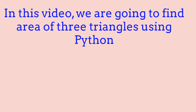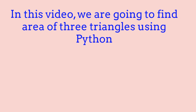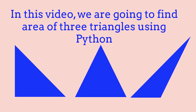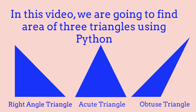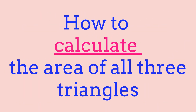In this video, we're going to be finding the area of three triangles using Python. The three triangles we're going to go over are right angle triangles, acute triangles, and obtuse triangles. In the last video, we learned how to draw all three of these triangles using Python Turtle, so don't forget to check that video out. Before we get into the coding part, we first need to know how to calculate the area of all three of these triangles.